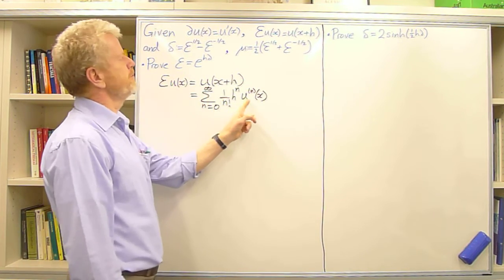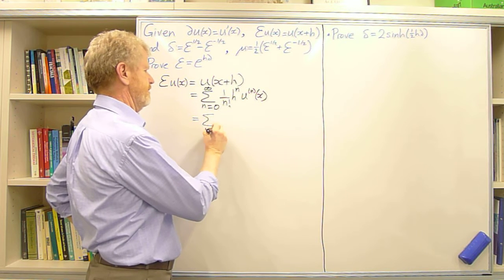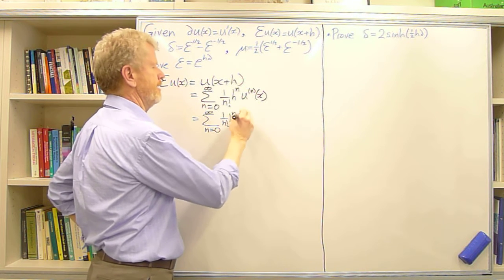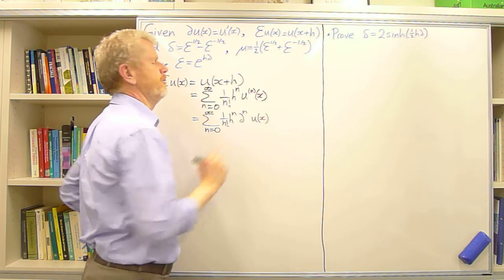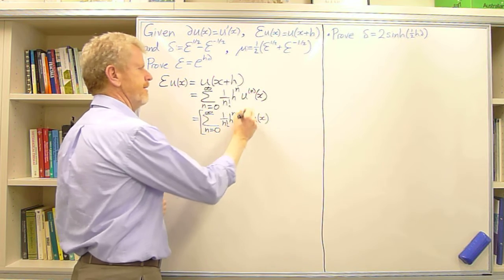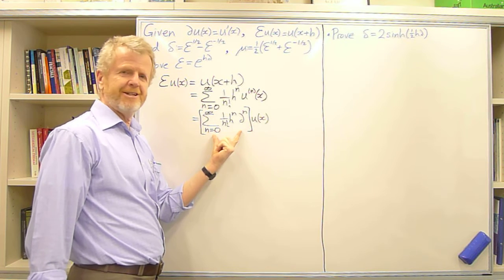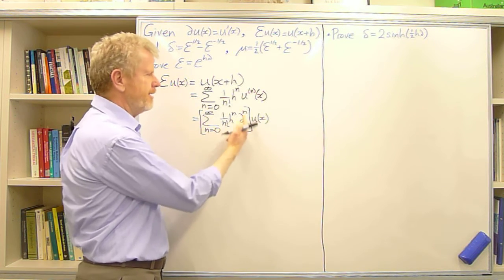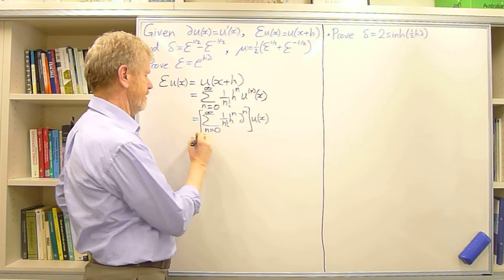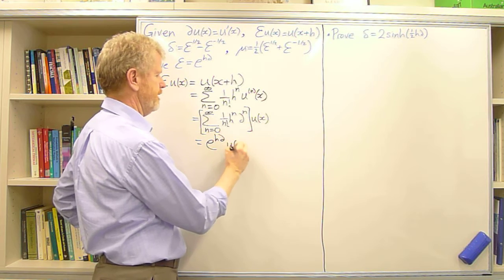We have another symbol for derivatives — D. So we write this as the sum from n=0 to infinity of (1/n!) h^n D^n acting on u(x). Taking out the common factor of u(x), what remains inside is nothing other than the Taylor series expansion of e^(hD). So formally, we write this as e^(hD) operating on u(x).